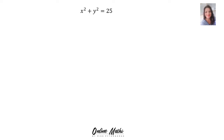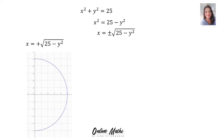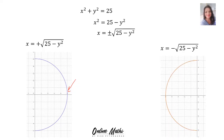We can also get half a circle with x as the subject of the formula. Given x² + y² = 25, we get x² = 25 − y², and taking the square root gives x = ±√(25 − y²). The half circle x = +√(25 − y²) is the right half circle with radius 5, and x = −√(25 − y²) is the left half circle with radius 5.